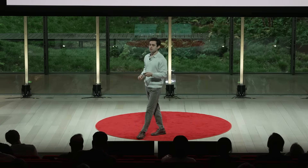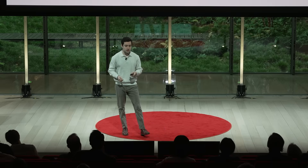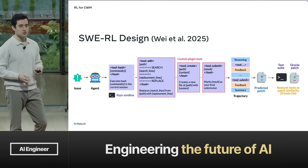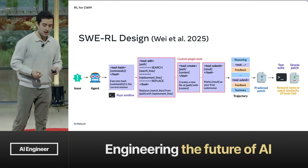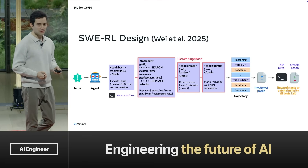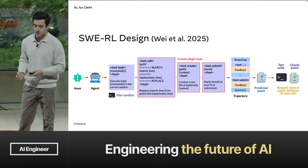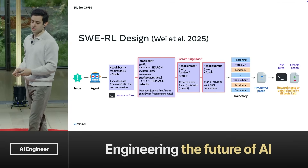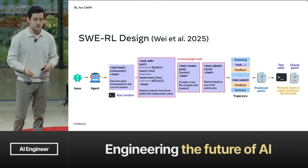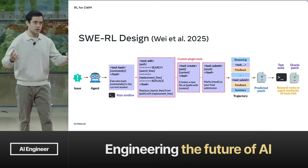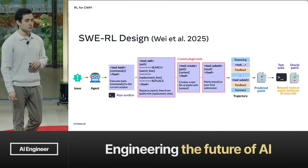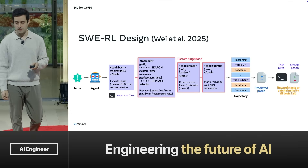This starts with SWIRL. We take a GitHub issue, feed it to the agent starting with that repository-level dataset, and use Bash. We learn commands in Bash, which lets us mutate our environment and the state of files. We can use an edit tool or create content and then submit things. Ultimately, we're putting the model in an environment very similar to what an engineer would be in, and learning end-to-end in a Bash-based setting.